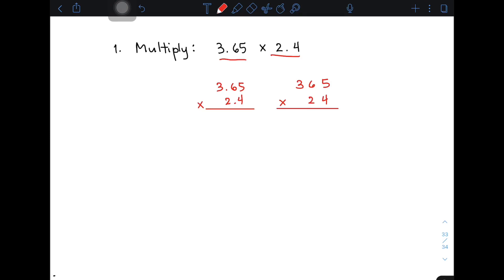Just imagine you are multiplying whole numbers. First, you need to multiply 4 and 5. 4 times 5 is 20, so 0 and carry 2. Then 4 times 6 is 24, plus 2 is 26. Carry 2. Then 4 times 3 is 12, plus 2 is 14.